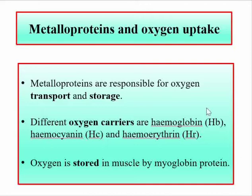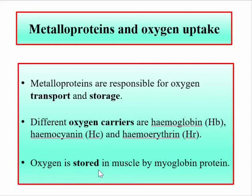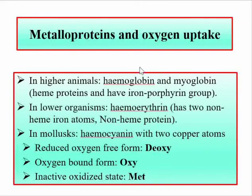Hemoglobin, hemocyanin, and hemoerythrin are the main oxygen carriers in biological systems, while myoglobin is used to store oxygen in the muscle. Hemoglobin and myoglobin are present in higher animals and are heme proteins with an iron porphyrin group — iron is the main metal in these two metalloproteins.